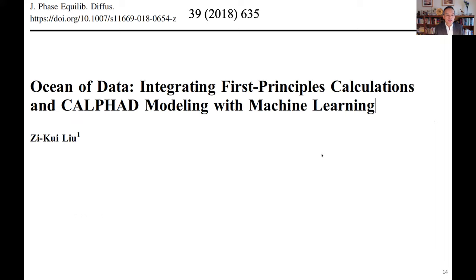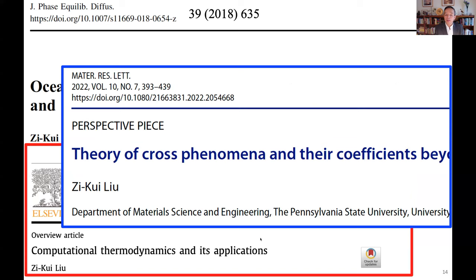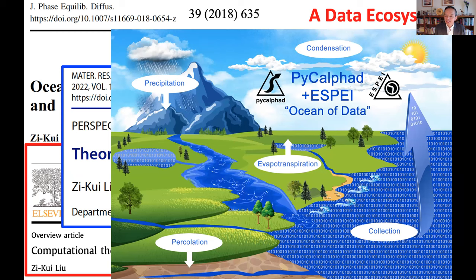The ecosystem including first-principles calculations is very important, combined with modeling and machine learning. We have a paper, if you're interested, that discusses all the properties we want to predict and what we want to do next — even reaching into kinetic properties, which are very related to free energy derivatives. I hope you will enjoy this workshop, and we will work together to create this data ecosystem for materials science and engineering.